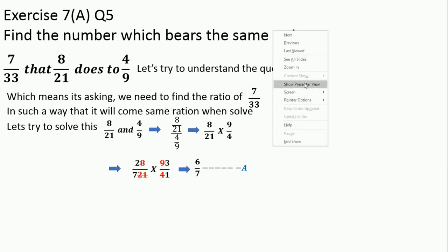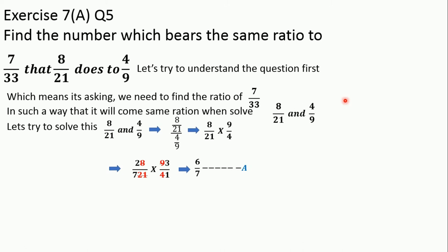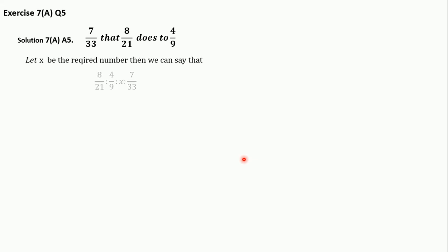That answer 6/7 should be the same when we solve 7/33 with the number we need to find. This is what the question is saying. For solving, I am considering there will be a value x — the number we need to find. So: 8/21 is to 4/9 as x is to 7/33.